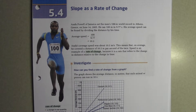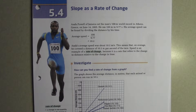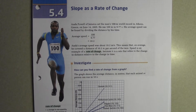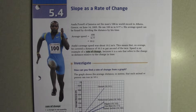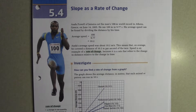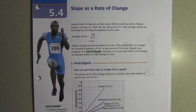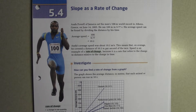Asafa Powell of Jamaica set the men's 100 meter world record in Athens, Greece on June 14, 2005. He ran 100 meters in 9.77 seconds. His average speed can be found by dividing the distance by his time. Average speed equals 100 over 9.77, which equals 10.2 meters per second.